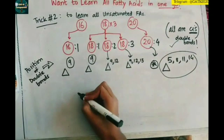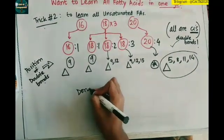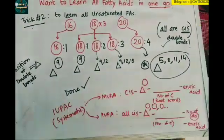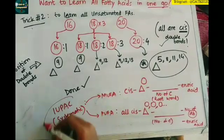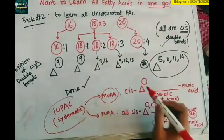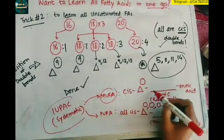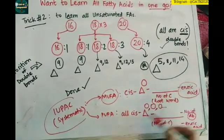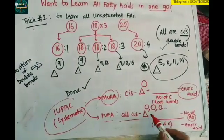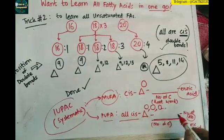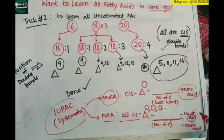And finally the special one: 5, 8, 11, and 14. For IUPAC nomenclature, in case of monounsaturated fatty acids we will write cis because there is just one, the position of that double bond, delta, the root word, number of carbons, and enoic acid. For polyunsaturated, we will just write all the positions, the number of carbons, the number of double bonds, and then enoic acid. It's done.